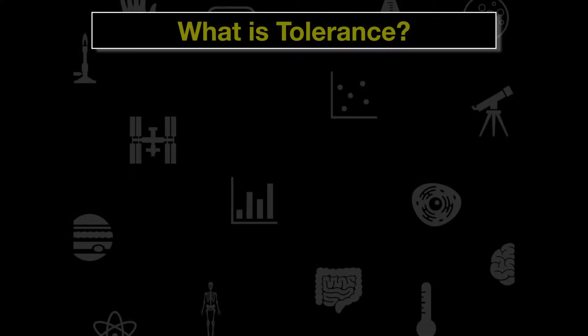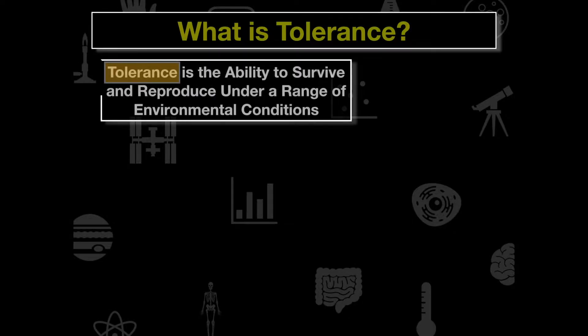In order to understand niches, we also have to understand tolerance. Tolerance is the ability to survive and reproduce under a range of environmental conditions.